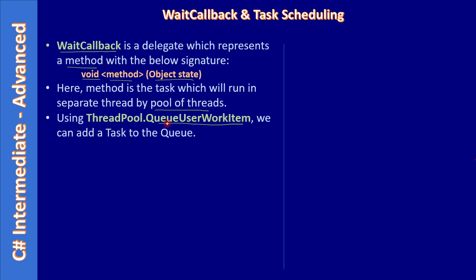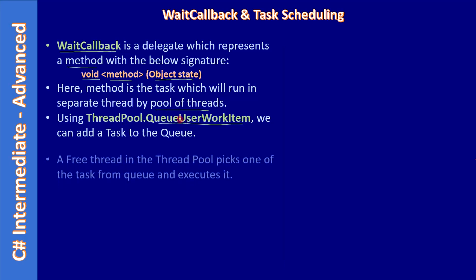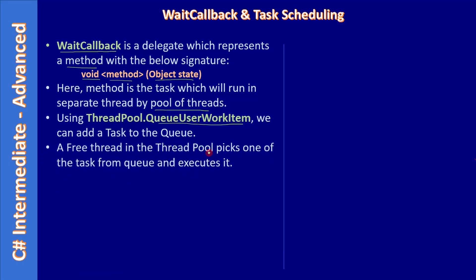We are directly calling the static QueueUserWorkItem API. Using this API you can create a task and add it to the thread pool, and the thread pool will take care of executing the added task in a separate thread. A free thread in the thread pool picks one of the tasks added to the queue via QueueUserWorkItem and executes it. The thread pool maintains a collection of pre-created threads, as we discussed in the first video.